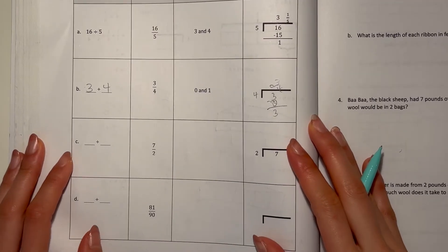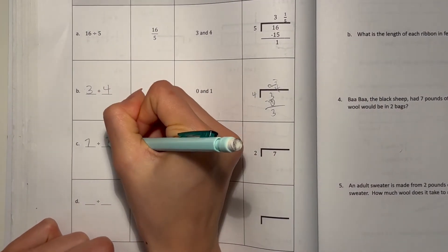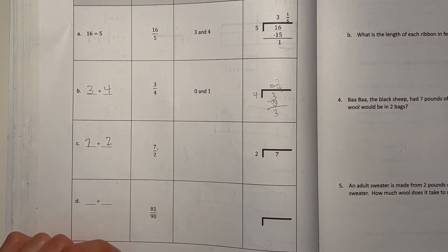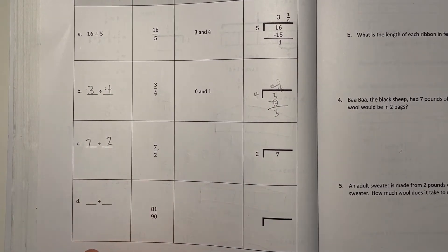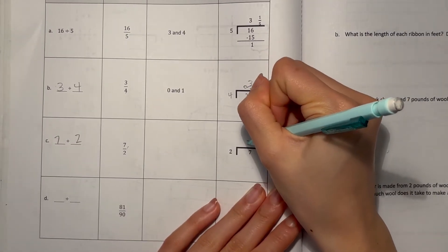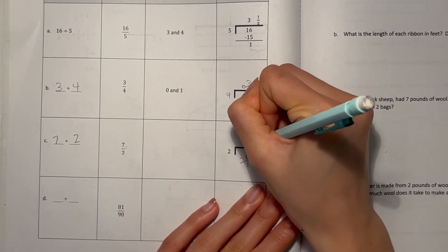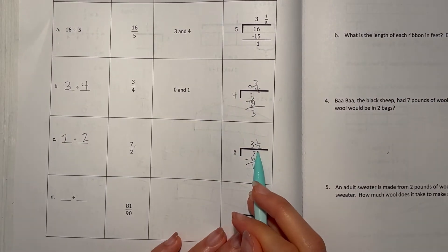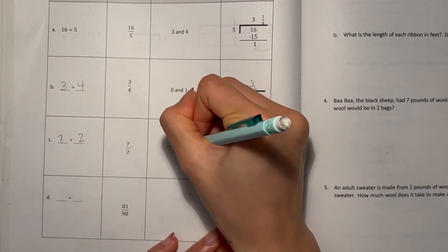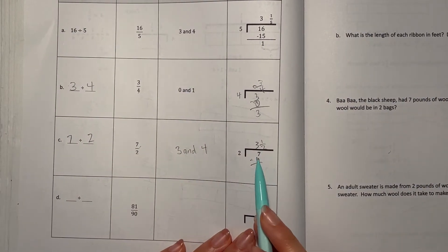C, 7 divided by 2, so 7 over 2. Let's see the long division first, 2 goes 3 times into 7, minus 6, you get 1 left over, so 3 and 1 half. That means this number is in between 3 and 4, because it's more than 3, but less than 4.